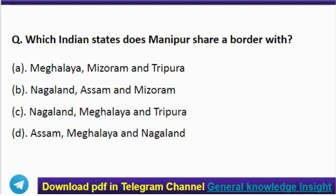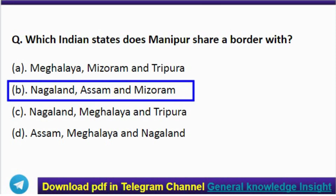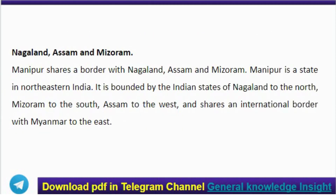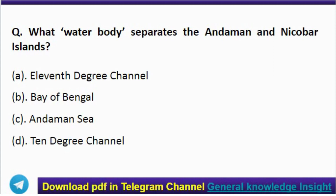First question: which Indian states does Manipur share a border with? The correct answer is option B — Nagaland, Assam, and Mizoram. Manipur is a state in northeastern India. It is bounded by Nagaland to the north, Mizoram to the south, Assam to the west, and shares an international border with Myanmar to the east.